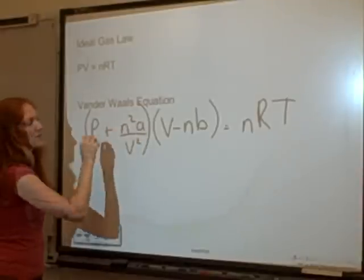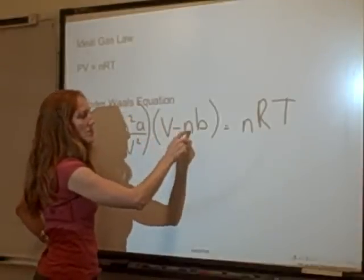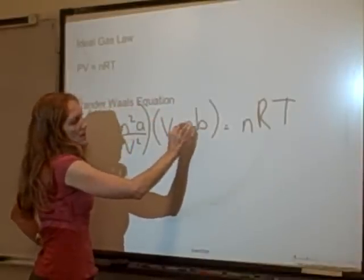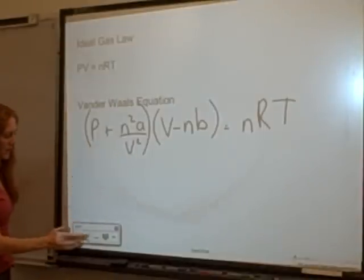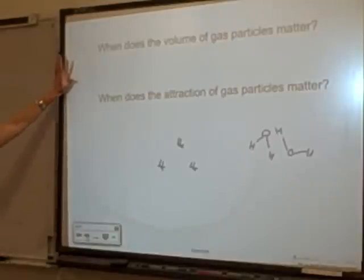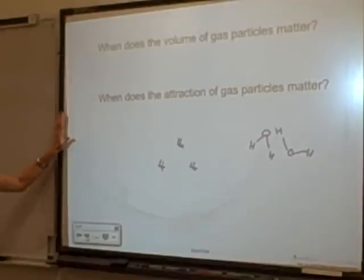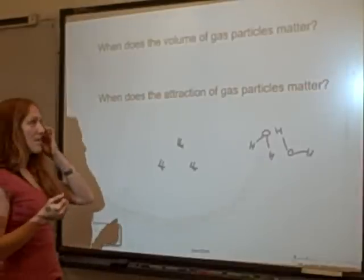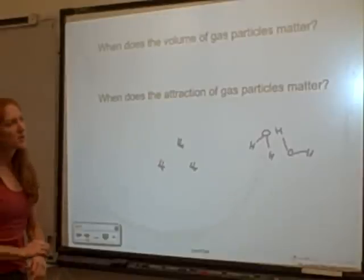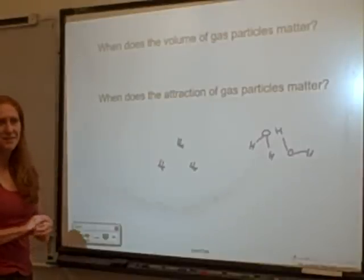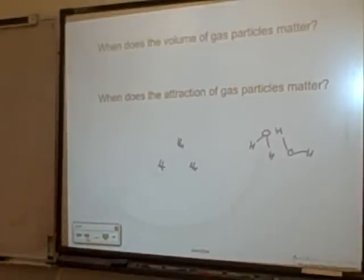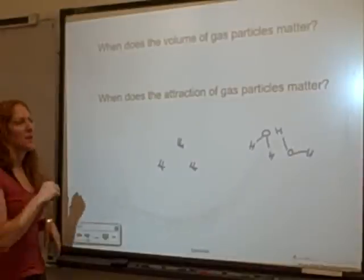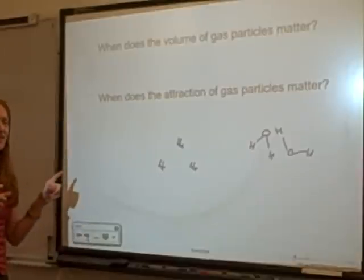The correction factor becomes larger as the number of particles increases or as the moles-per-volume (molarity) increases. The volume correction grows with more particles, so at high concentration both correction factors matter more and the gas is not ideal. The volume of gas particles matters at high concentration, and attraction also matters because the particles are crammed close together.